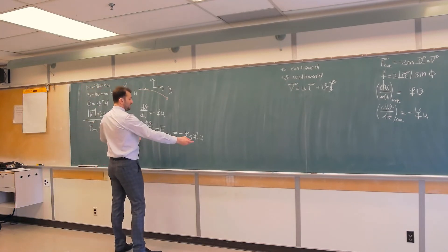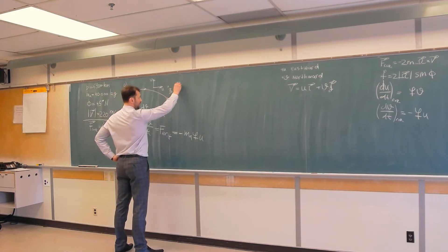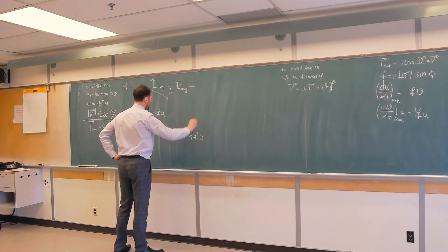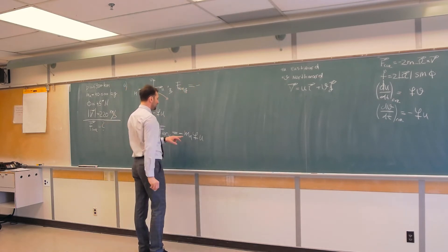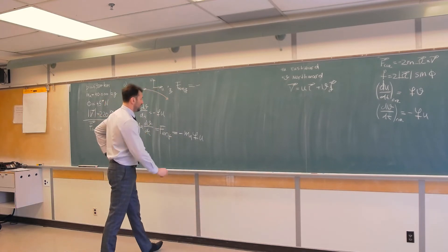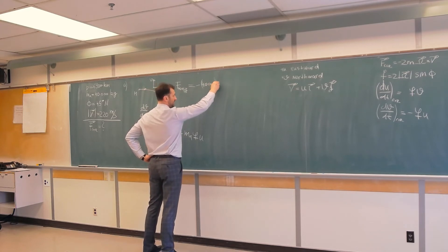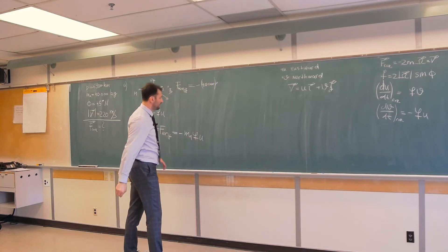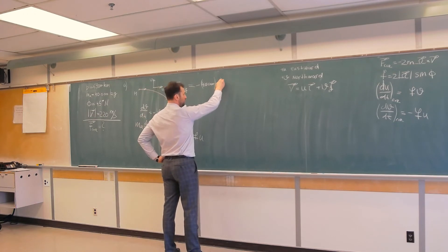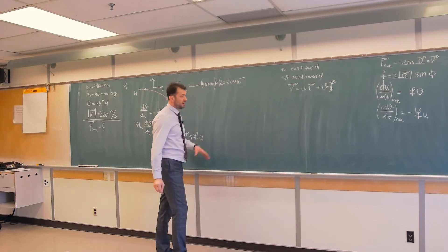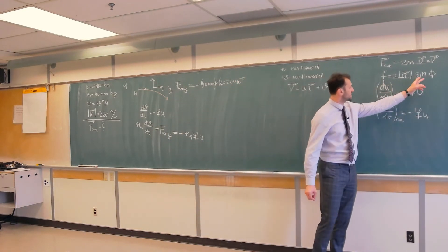Well, that's it. We just need to plug in numbers. So Coriolis force in the y direction is equal to negative mass of the aircraft, which is 40,000 kilograms, times f. That is 2 times omega, and omega is 7.27 times 10 to the power negative 5.